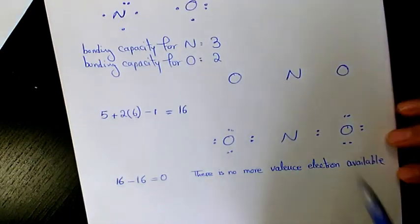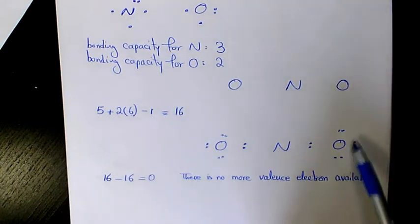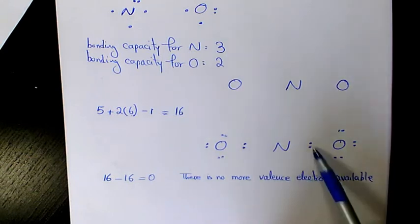So what you need to see here, we check the octet rule. So oxygen has an octet because two, four, six, eight, two, four, six, eight. But if you look at the nitrogen we have two and four, so that's not octet.